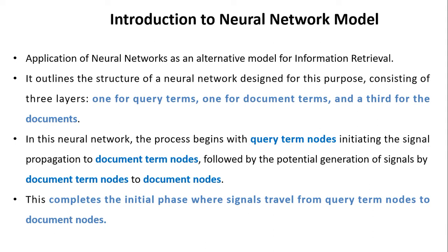The neural network designed for information retrieval consists of three layers: one for query terms, one for document terms, and one for documents. The process begins with query term nodes which initiate signal propagation to document term nodes, and document term nodes then generate the signal for the document nodes. This completes the initial phase where signals travel from query terms to document terms and then to document nodes.